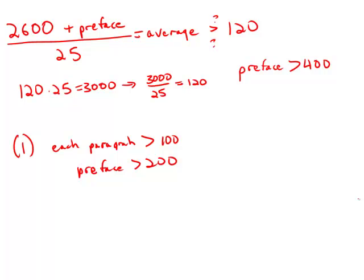So we have no way of knowing whether the preface is bigger or smaller than 400. So we have no way of knowing whether the average is over 120 or not. So this statement by itself is insufficient.